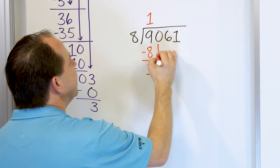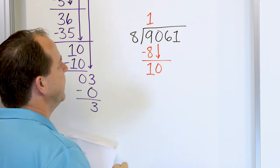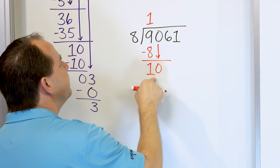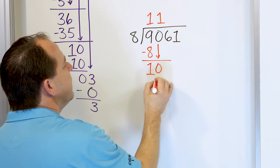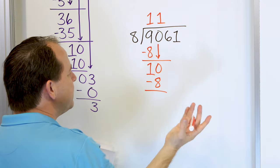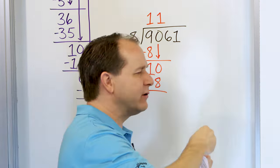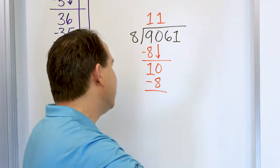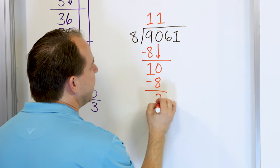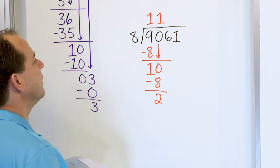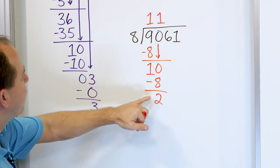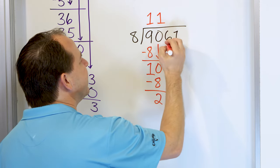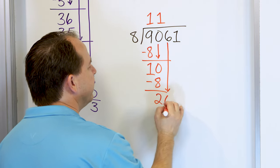After we subtract, grab the next digit, which is a 0. Now we have a 10. 8 times 1 is 8, 8 times 2 is 16 — too big. So 8 times 1 is 8. 10 minus 8: start with 8 and count up — 9, 10 — that's a difference of 2. After you subtract, grab the next digit, which is a 6, and now you have 26.